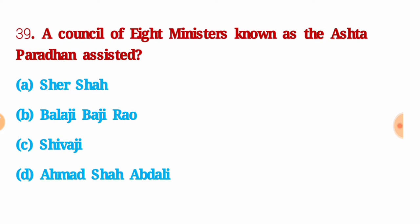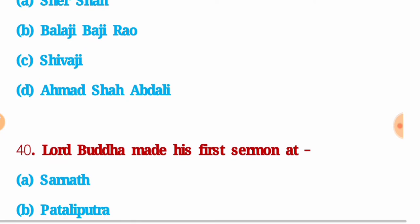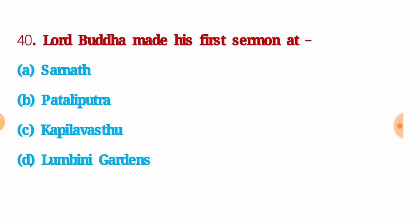Next question: a council of eight ministers known as Ashta Pradhan assisted — the right answer is option C: Shivaji. Next question: Lord Buddha made his first sermon at — the right answer is option A: Sarnath.